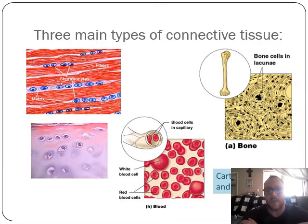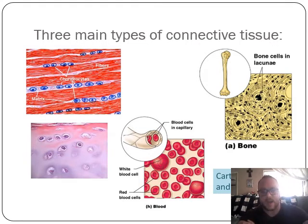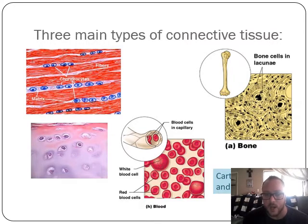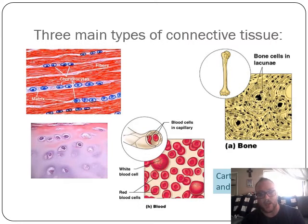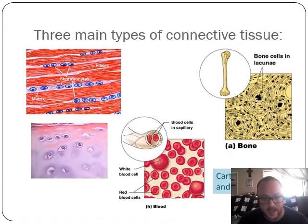These are the three main connective tissues we're going to look at: cartilage on the far left, blood in the middle, and bone on the far right. Bone is the solid, cartilage is the semi-solid, and blood is the liquid one - the red blood cells and white blood cells are solid themselves, but what they sit inside is liquid. This whole lesson is specifically about cartilage.